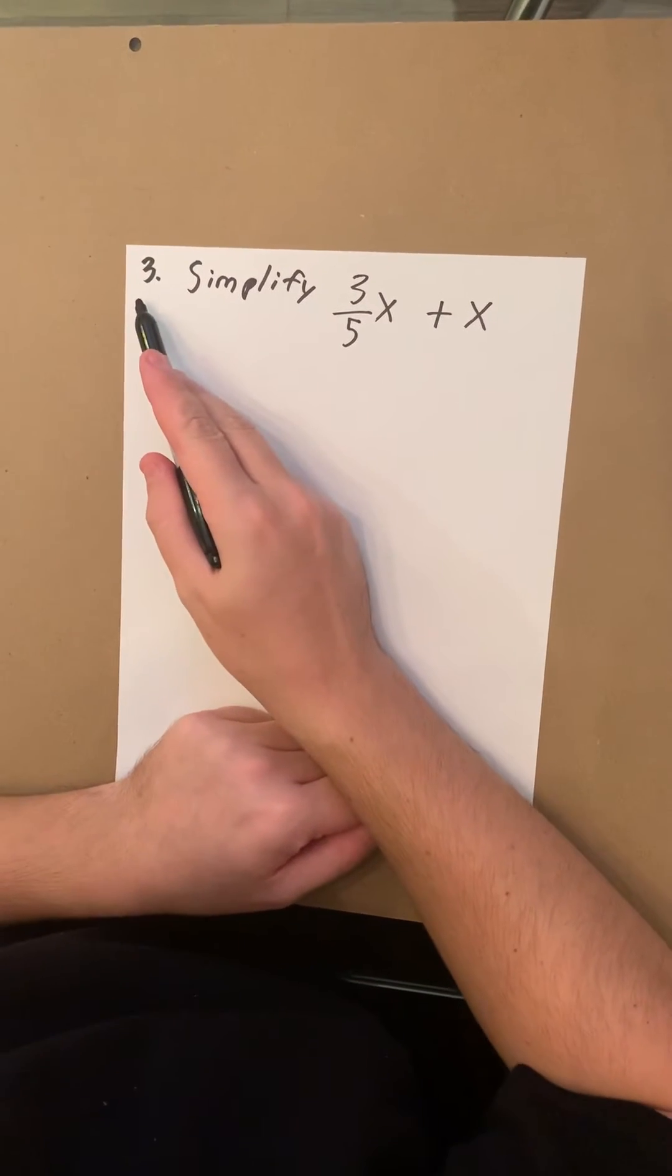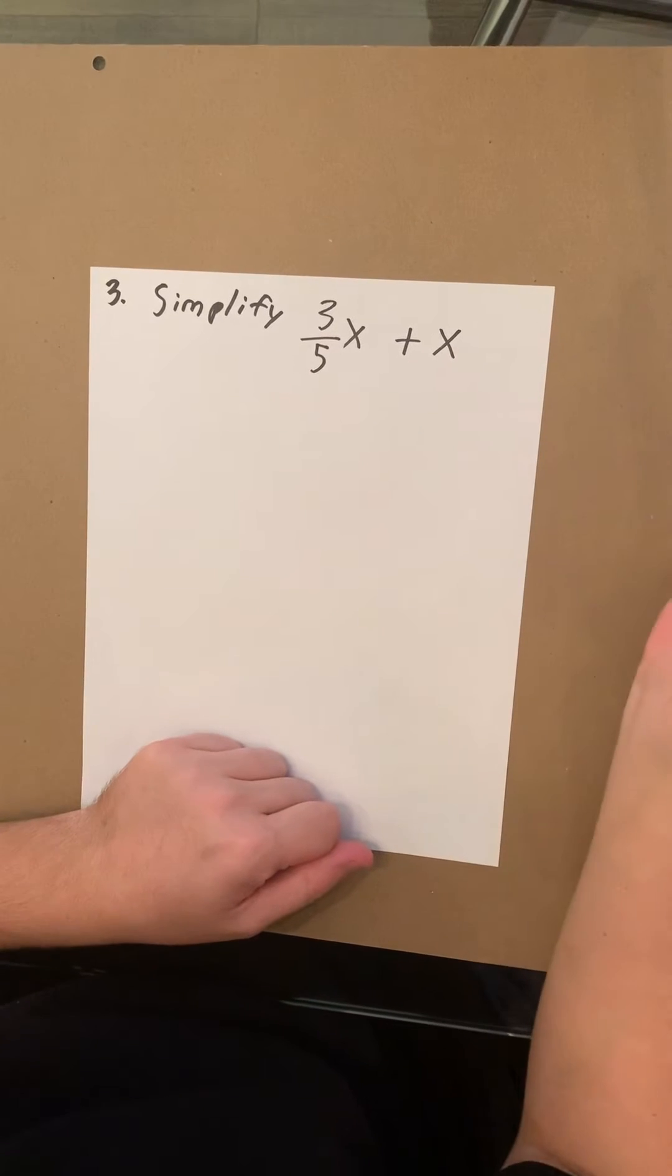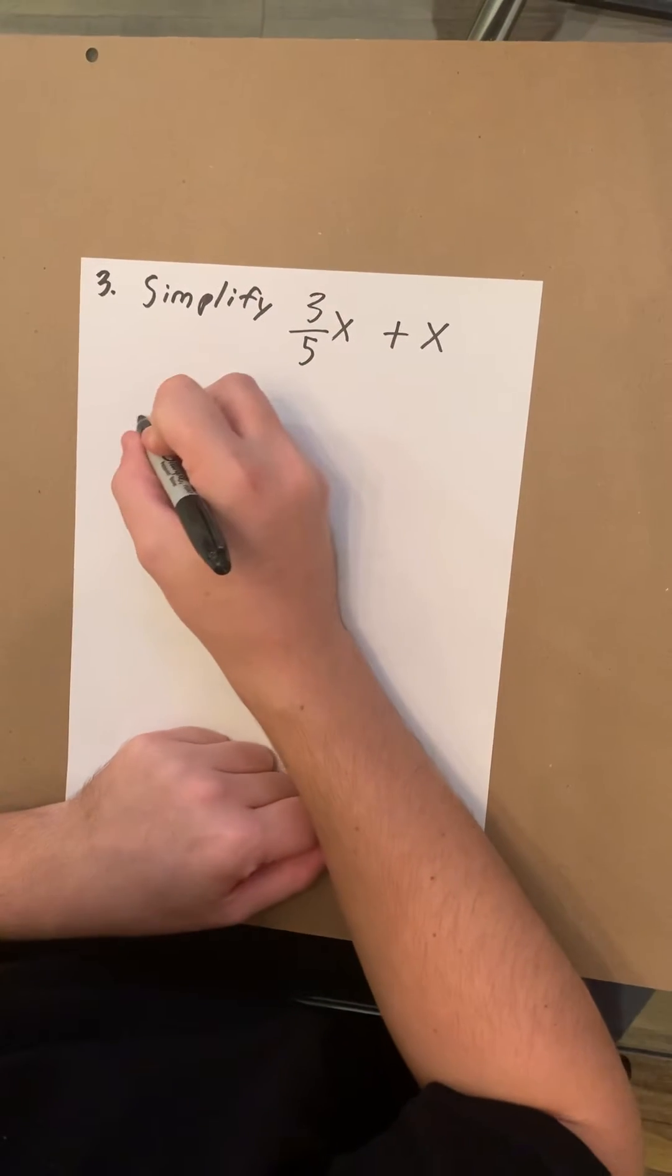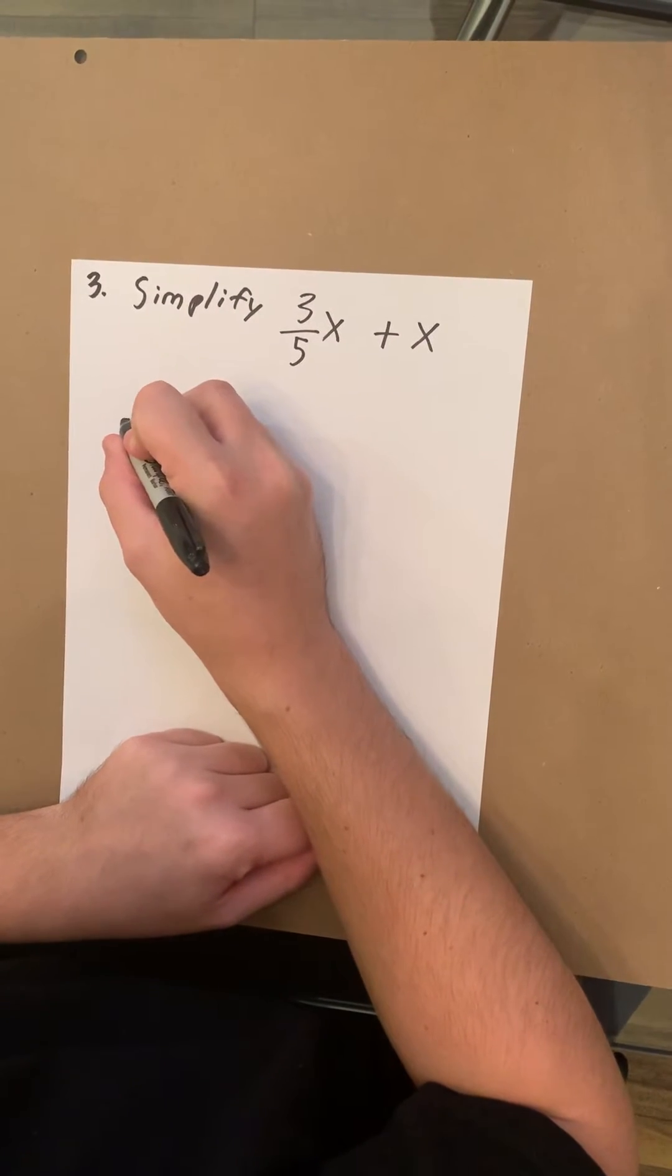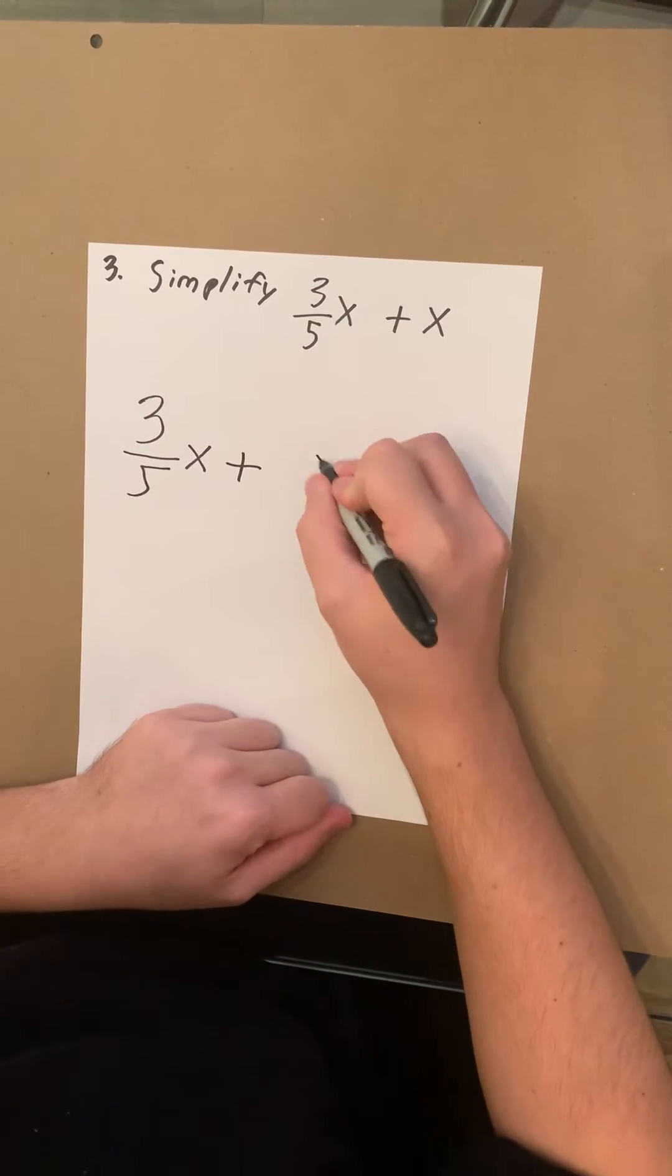All right. So number three is to simplify 3 over 5x plus x. Let's rewrite this down here so it's more visible. We have 3 over 5x plus x.